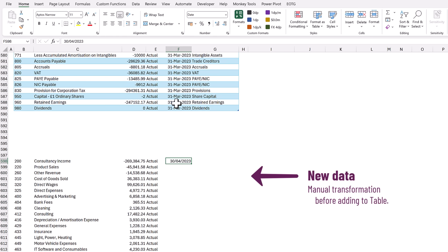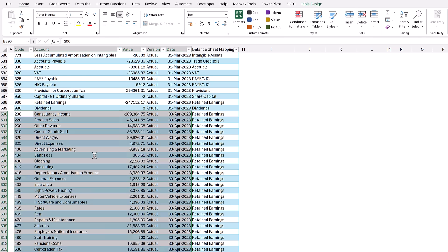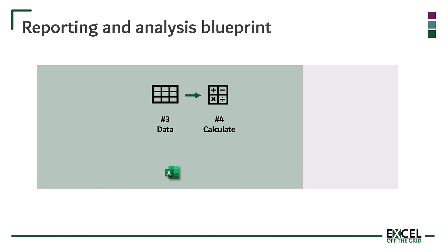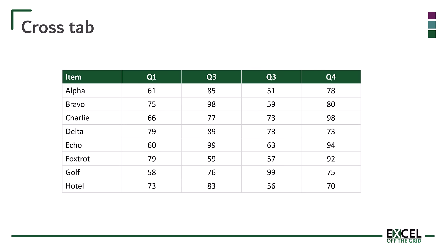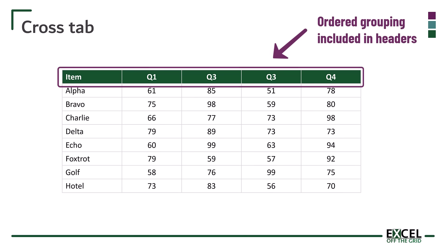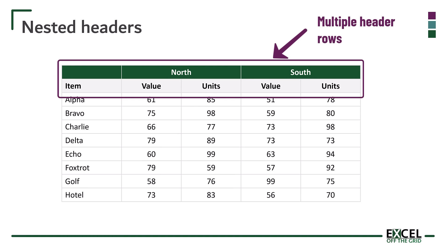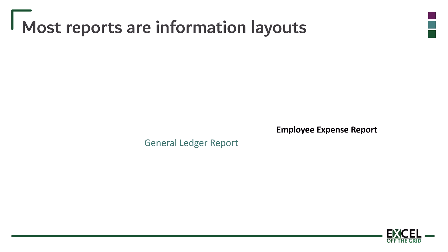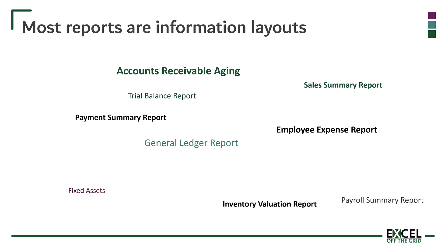Now, there are lots of people who have adopted tables, but unfortunately that's where they've stopped. That means they're still copying and pasting data into Excel and then manually reshaping it to add it to the bottom of the table. In our blueprint, this brings us back to step three, which is data. Data is what we use as the inputs for our calculations. It's really important to understand the differences between information layouts and data layouts. Crosstab, for example, is an information layout. If anything has nested headings, it is an information layout. In fact, most of the inputs that we deal with are information layouts.